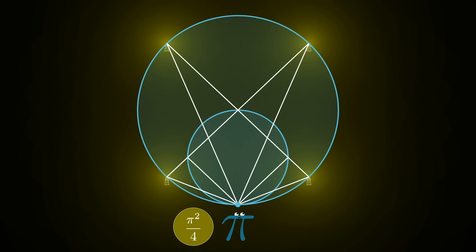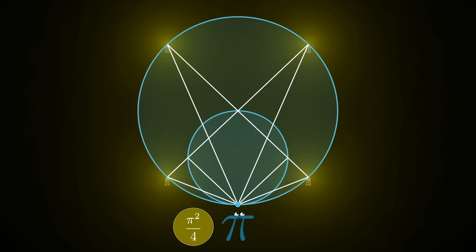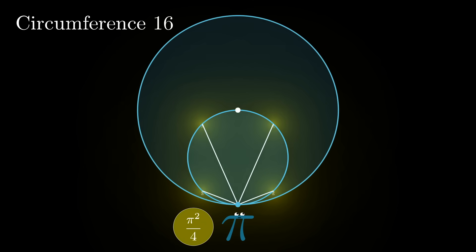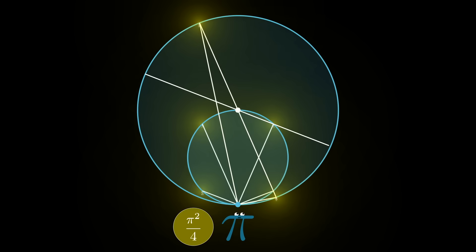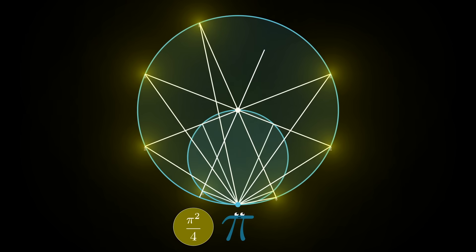Alright, you might see where this is going, but I want to walk through this for just one more step. You draw a circle twice as big, so circumference of 16 now, and for each lighthouse you draw a line from that lighthouse through the top of the smaller circle, which is the center of the bigger circle, and then create two new lighthouses where that line intersects with the larger circle.